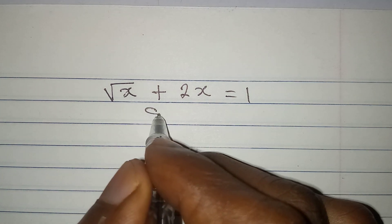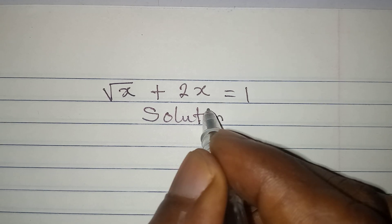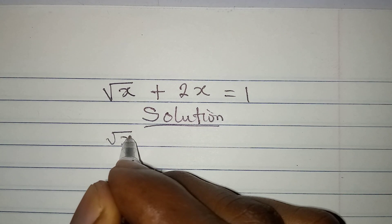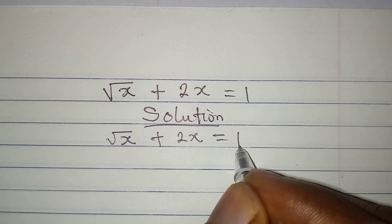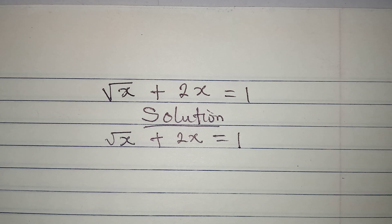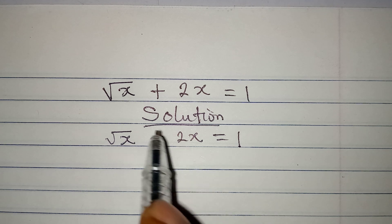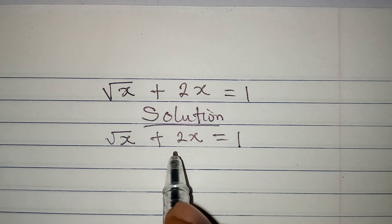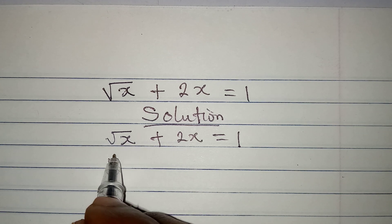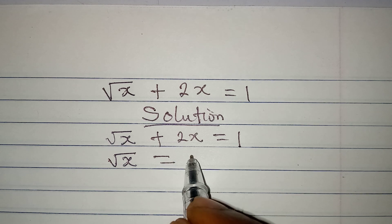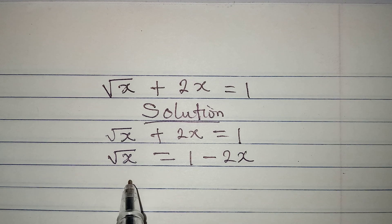Hello everyone, let's provide the solution to this problem: square root of x plus 2x equals 1. What could be the value or values of x? The first thing we do is make square root of x the subject, so we have square root of x which will be equal to 1 minus 2x.